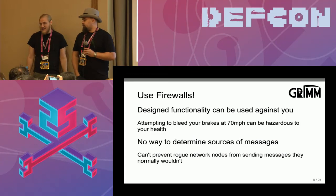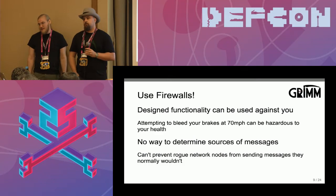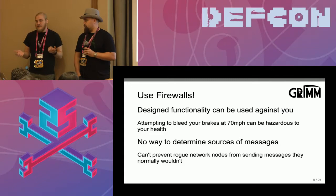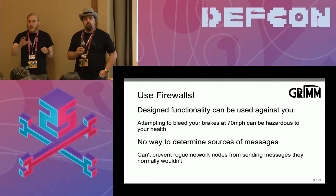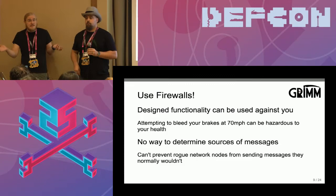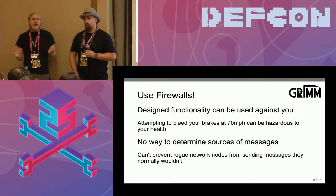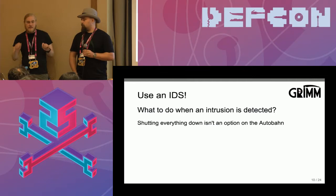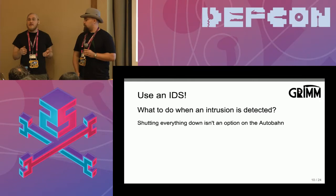Traditional networks use things like firewalls. They tend not to work quite so well in a CAN bus network. If you have any sort of message passing ability, a lot of the time the messages normally passed during normal operation can be used against you. On most vehicles there's some sort of diagnostic methodology where you can pulse the ABS modulator to bleed brakes — that's a normally allowed message, so it gets through a firewall. On the CAN bus there's no way to determine what node is sending a message, so once the message is on the network it's indistinguishable from any other node's messages.